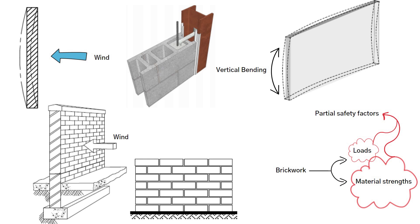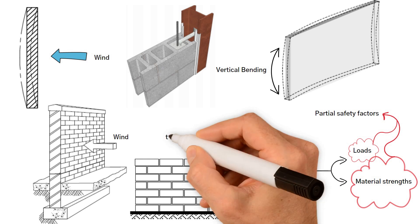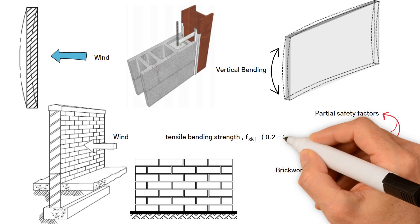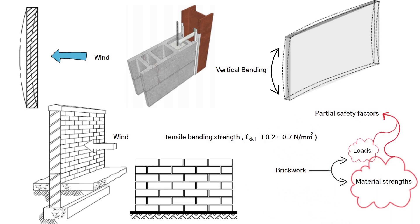For vertical spanning, the value of the characteristic tensile bending strength ranges between 0.2 and 0.7 newton per millimeter squared, depending upon the strength of the mortar and the type and absorbency of the masonry units.